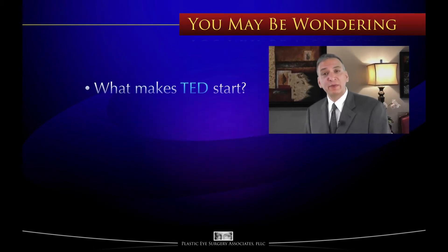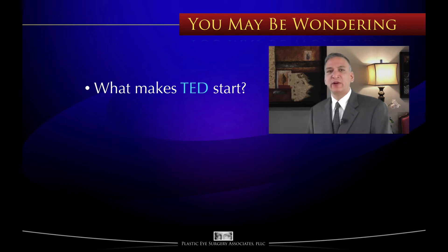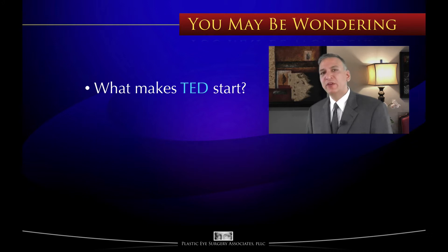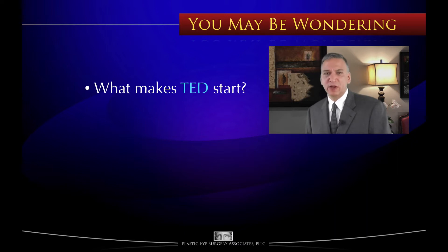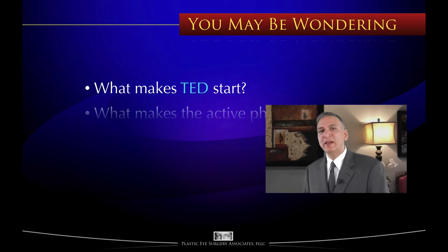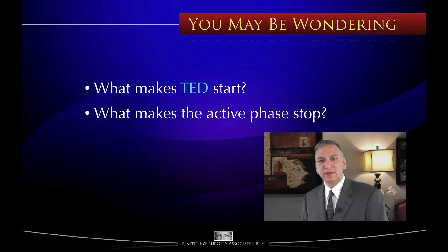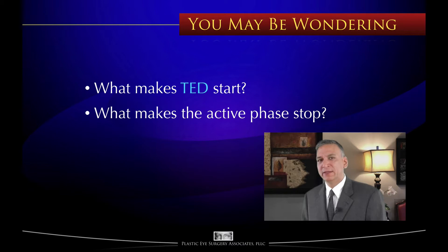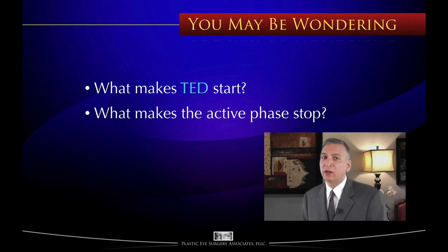At this point, you may be wondering: what makes thyroid eye disease start? In Section 3 of this video series, we said that there has to be a genetic predisposition, but then there also has to be some kind of a trigger — an event or an environmental factor. Some of these we know, but there are probably many we don't. Today, a more compelling question for researchers and physicians alike is: what makes the active phase stop? If we know this, then perhaps we can turn thyroid eye disease off before it creates mayhem. In fact, not only could we turn off thyroid eye disease, but perhaps we could control all autoimmune disorders.